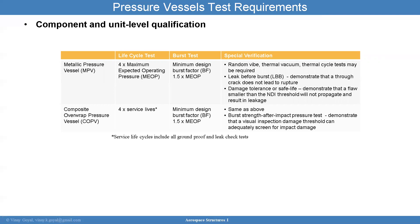Damage tolerance and safe life means that if you have a flaw at the NDI limit — the non-destructive evaluation limit — that flaw does not propagate catastrophically. You don't want to lose mission performance from any leakage. The factor typically used in these analyses is 4x: if you show a vessel can survive 1,000 cycles, you may accept it to only 250 cycles — a fourth of 1,000.